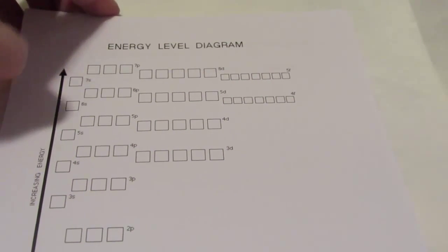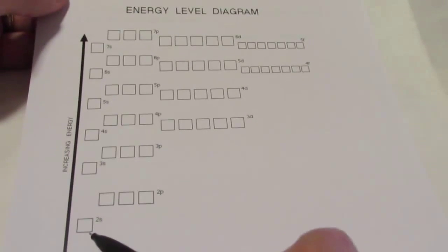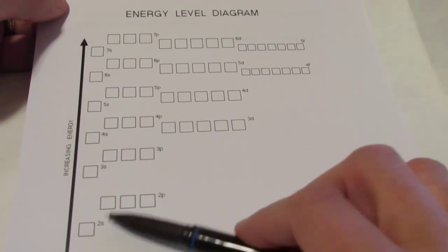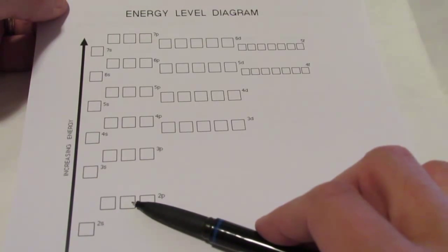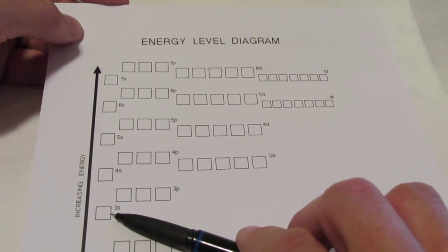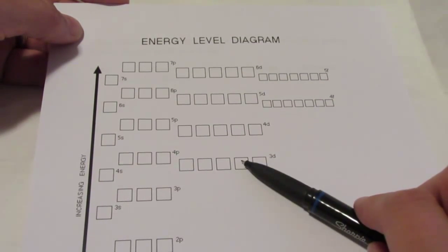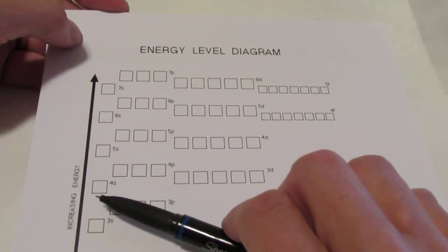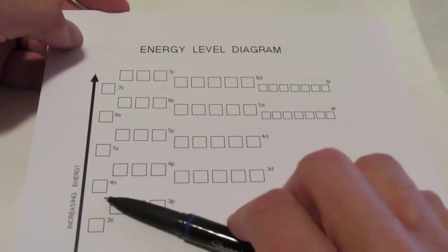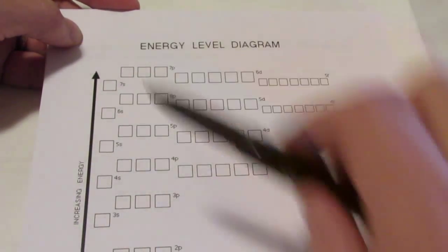Here's a schematic diagram of our hotel. On the second floor there are two hallways: S and P. The third floor has 3S, 3P, and 3D — three hallways. On the fourth floor there are four hallways: S, P, D, and F. And then we have the fifth, sixth, and seventh floors. As we move up, the electron is increasing in energy.